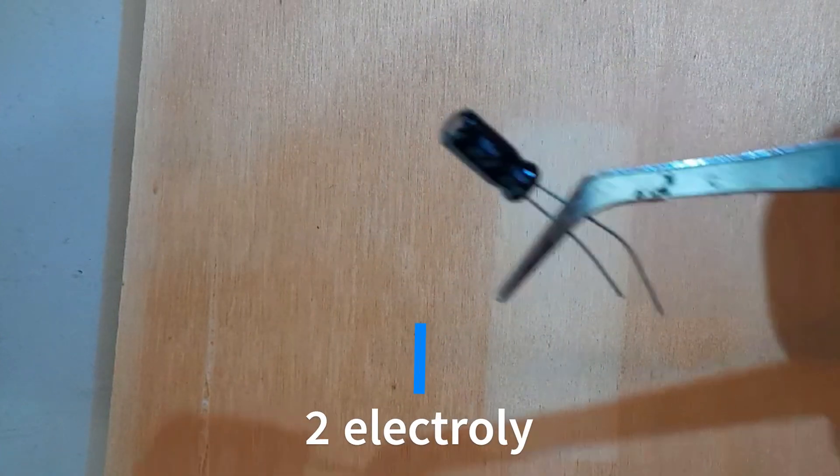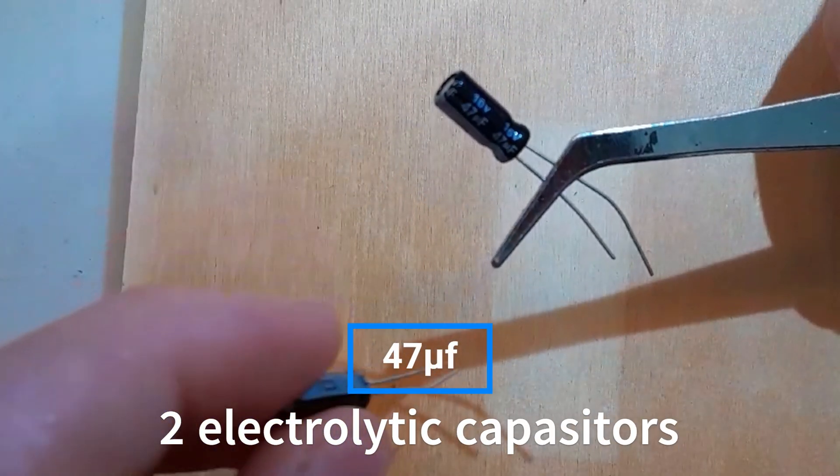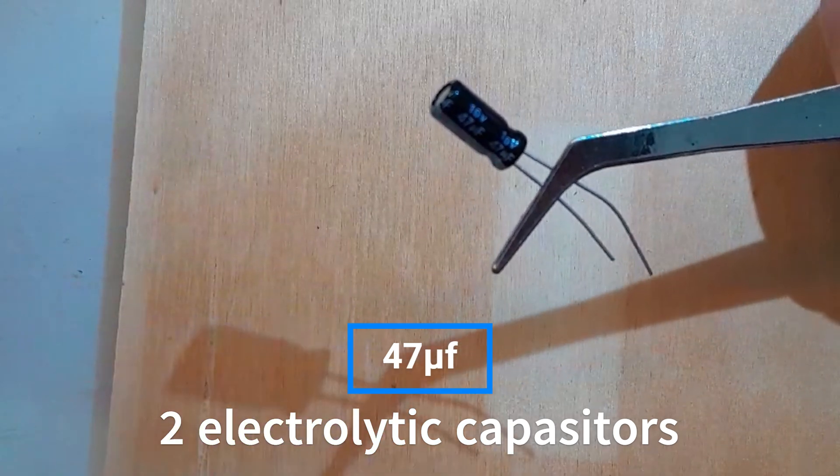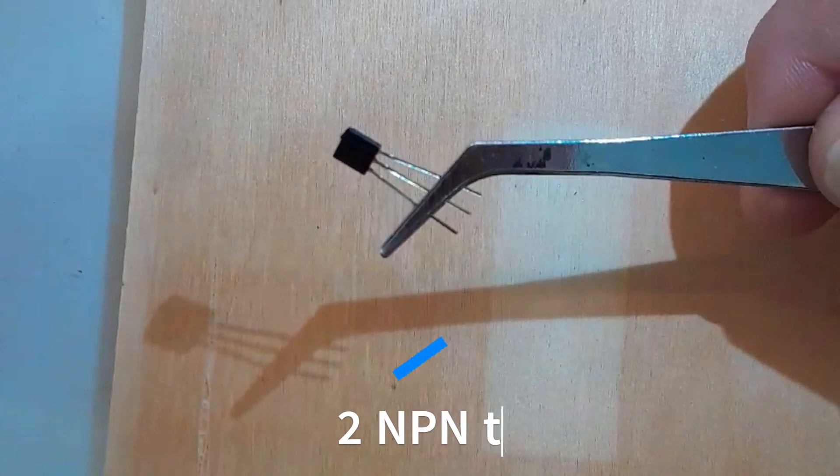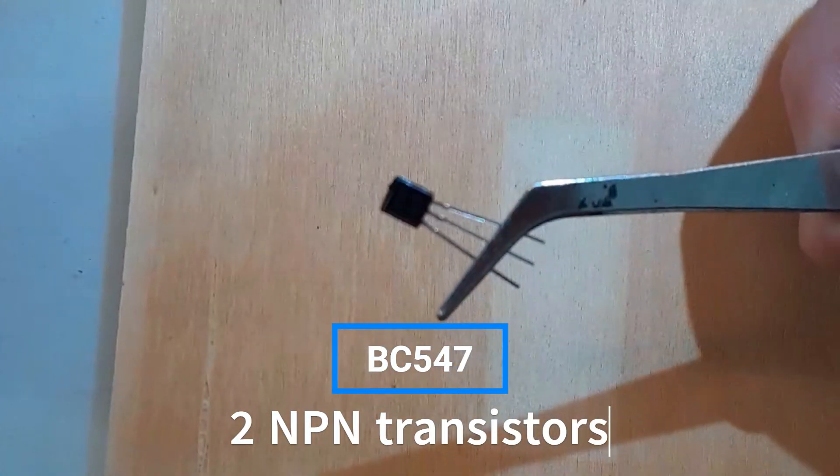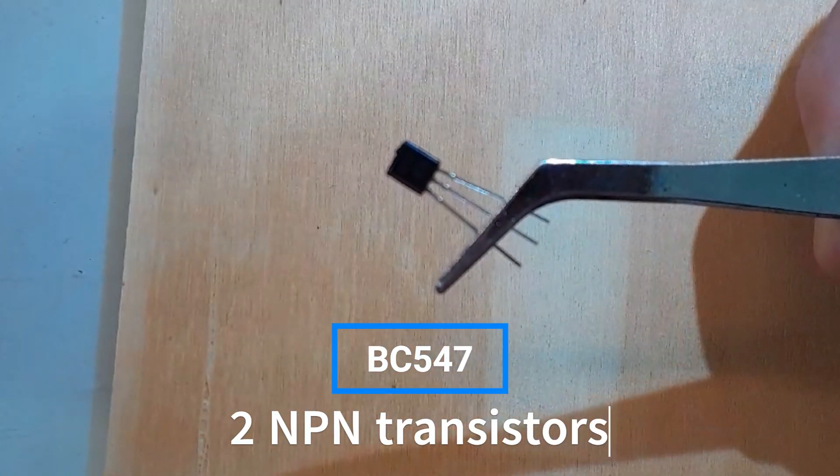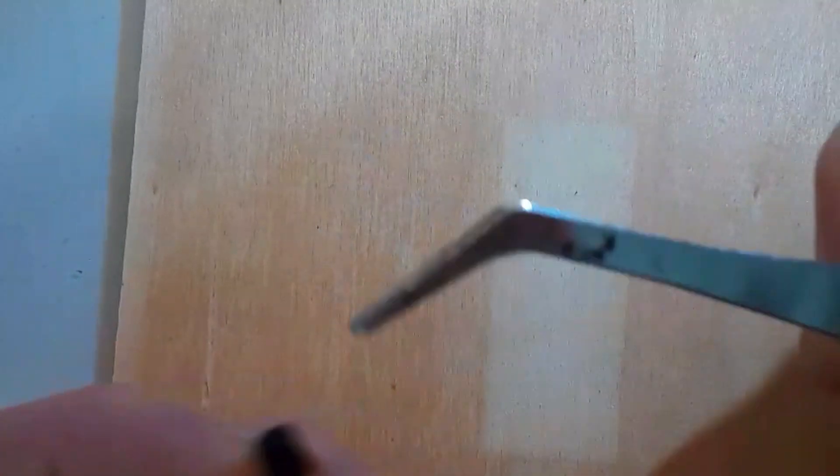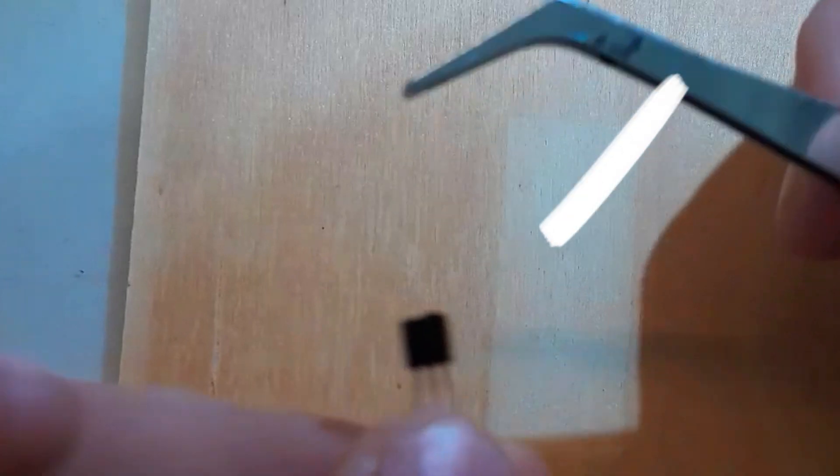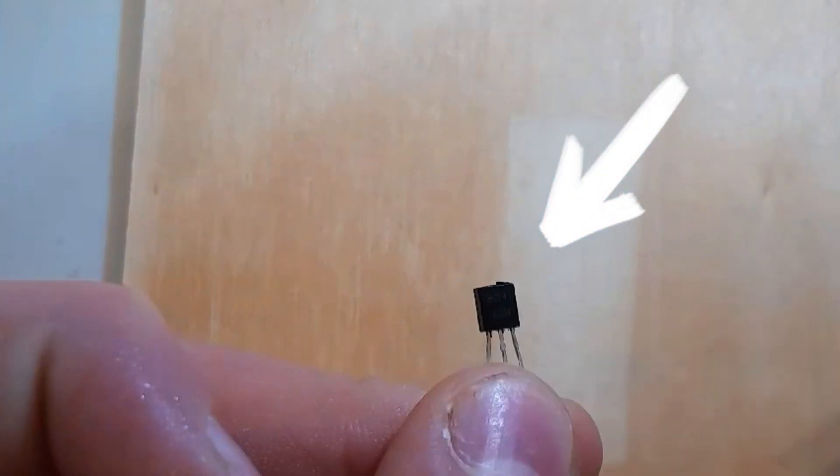Two capacitors, 47 microfarad. An NPN transistor - this one is BC547. You can read it on the front of the transistor.